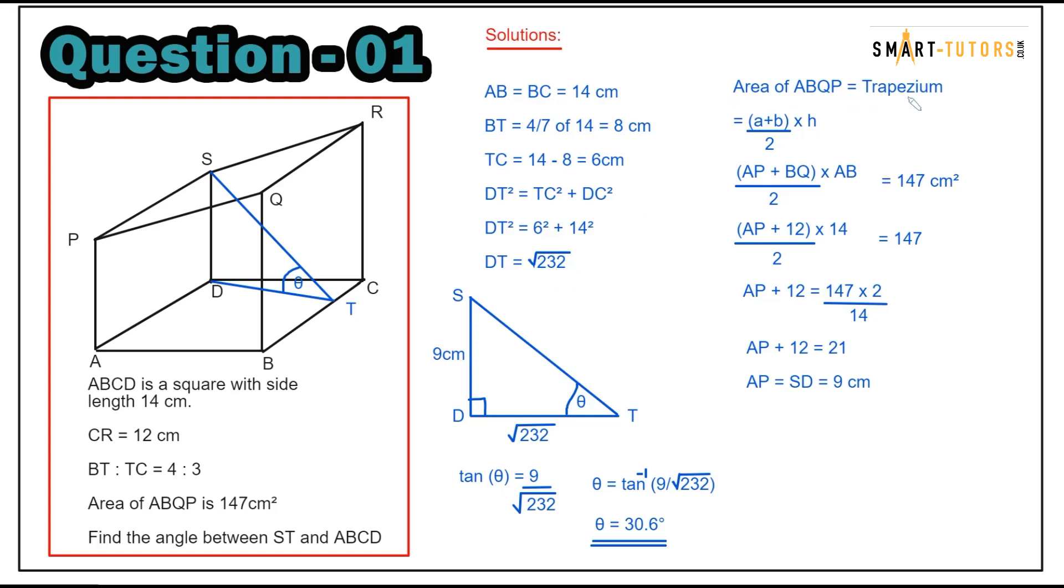Area of ABQP trapezium: substitute the values. AP is unknown, BQ is unknown. AP plus BQ times AB which is the height divided by 2 equals 147. AP is unknown, BQ is 12, times AB is 14 divided by 2 equals 147. So AP plus 12 equals 147, therefore AP equals 9.